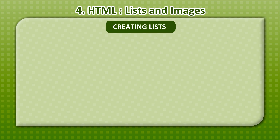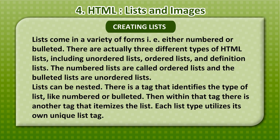Creating lists: lists come in a variety of forms, either numbered or bulleted. There are actually three different types of HTML lists including unordered lists, ordered lists, and definition lists. The numbered lists are called ordered lists and the bulleted lists are called unordered lists.